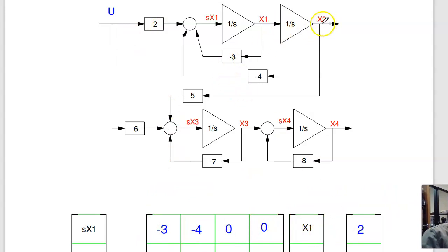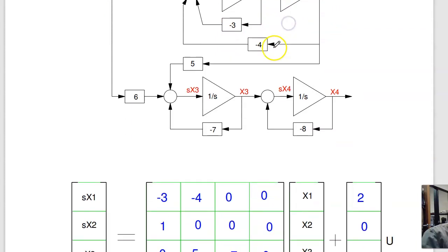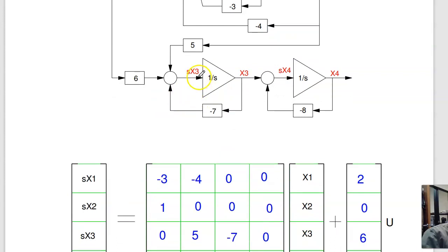The second one, sx2, that's right here, is x1. That gives you the second row. The third row, sx3, is 5x2 plus 6u—this is u—minus 7x3. That gives you right here: 5x2 - 7x3 + 6u.